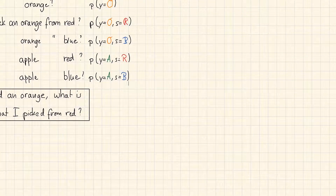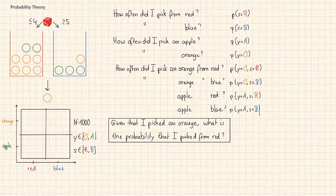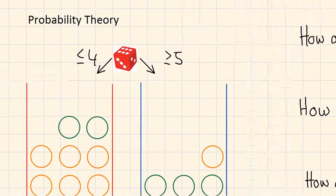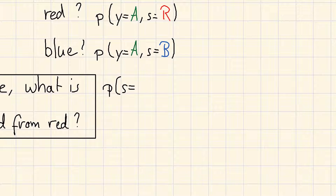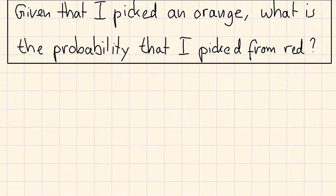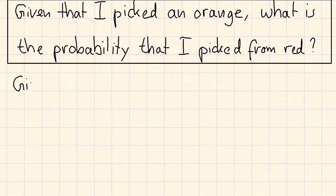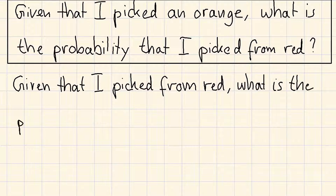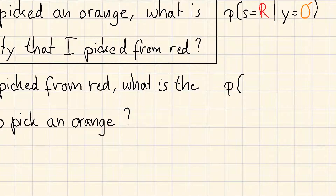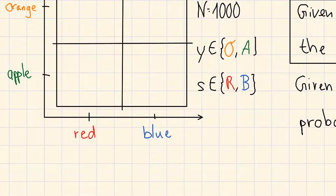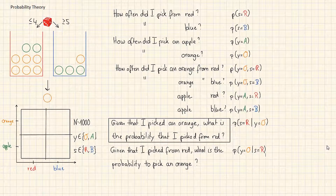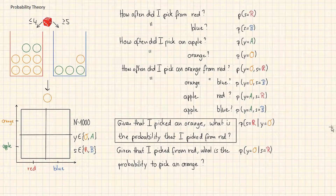The final question — given that I picked an orange, what is the probability that I picked from the red box? — we denote as p(s = r | y = o). The vertical bar indicates a 'given' statement. We can also turn this around and ask: given that I picked from the red box, what is the probability of picking an orange? As you will see, this question is a lot easier to answer. If you look at the red box, you see six oranges and two apples, so the answer is six over eight, which is three over four.